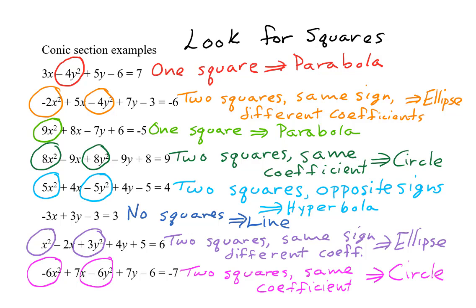Once you know which type of conic section your equation represents, you can graph it by completing the square, as shown in the earlier videos in this playlist.